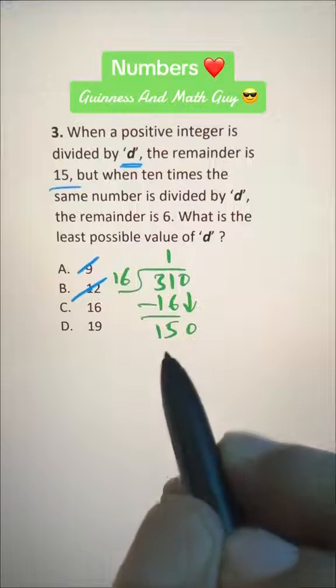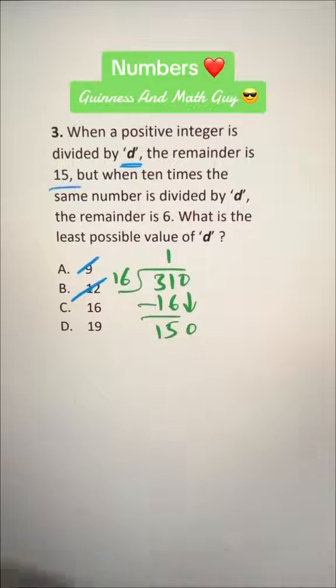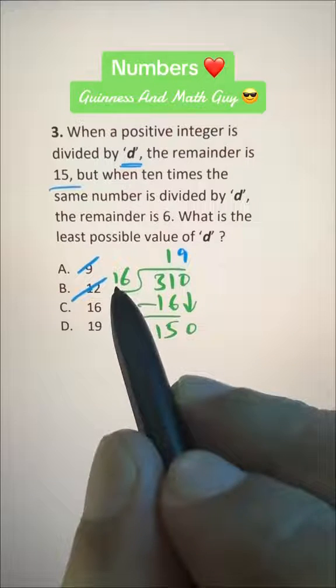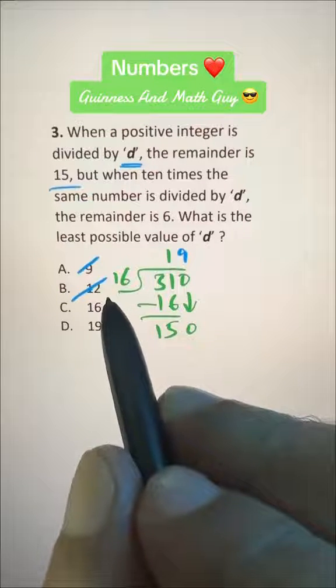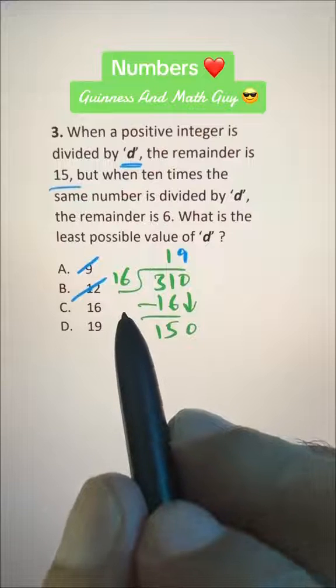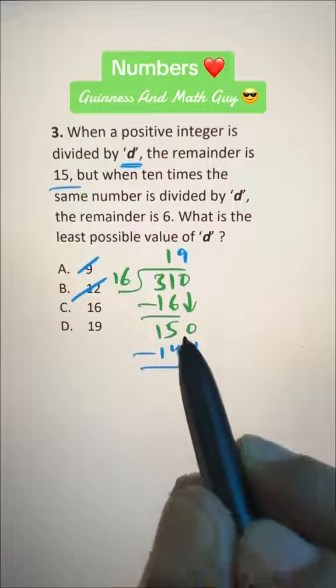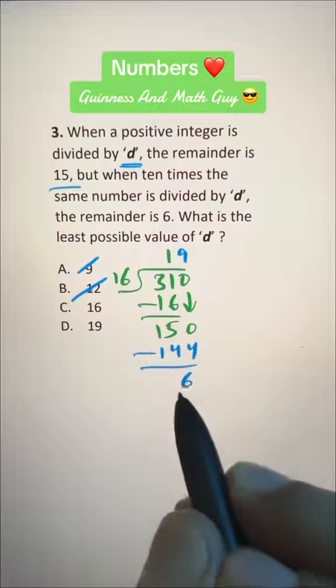Now 16 times 10 is 160, greater than 150, so we'll try 16 times 9. 9 times 10 is 90 and 9 times 6 is 54, so 90 and 54 is 144. We can see 150 minus 144 is 6.